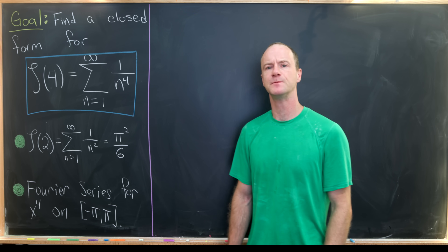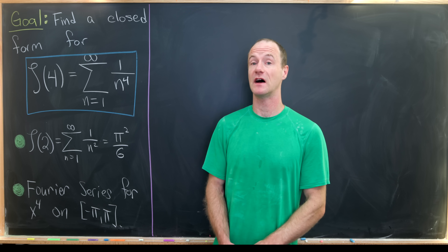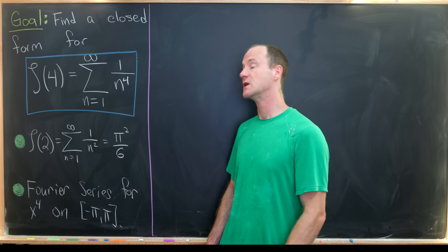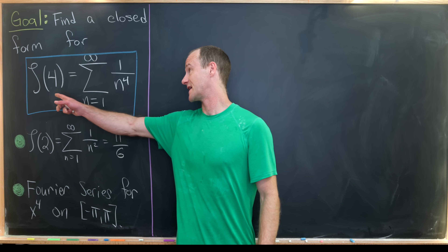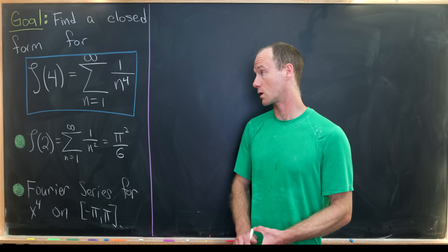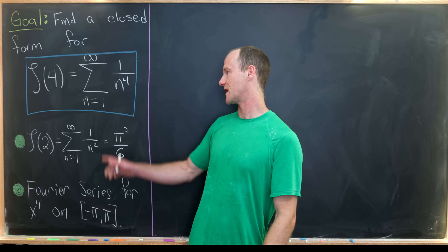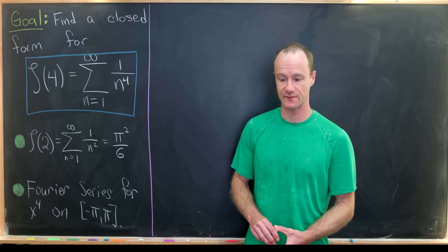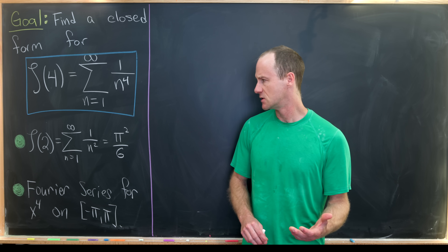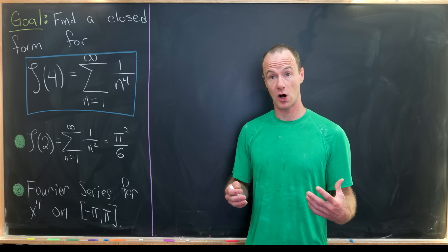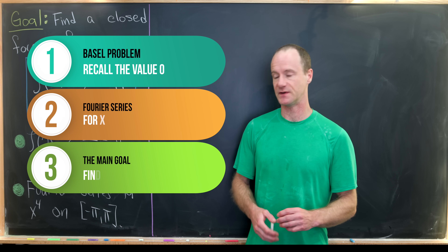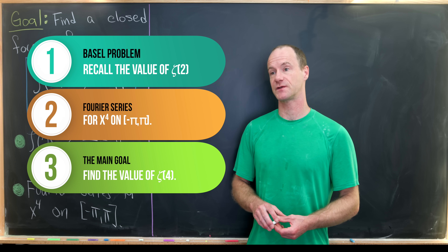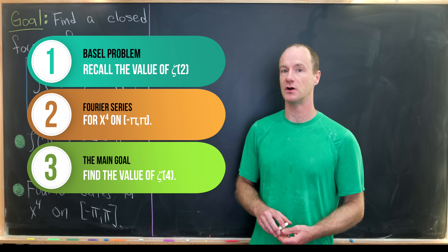I've got a pretty nice video for you today. Our goal is to find a certain value of the Riemann zeta function and find a closed form. In particular, we're going to calculate zeta evaluated at 4, which is the sum as n goes from 1 to infinity of 1 over n to the 4th. To do this, we'll first recall a fact from previous videos, then calculate the Fourier series for a certain function and put it all together.